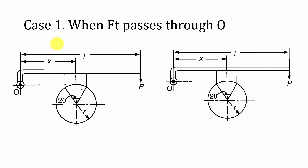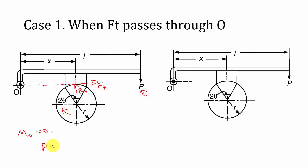There are three cases based on the location of the pivot point O. Case 1 is when Ft passes through O. In this case, considering clockwise rotation: force 1 is P, force 2 is Rn acting upward, and Ft acts towards the right. Taking the moment about O equals zero: minus P into L (clockwise) plus Rn into x (anticlockwise), and there is no eccentricity between Ft and O, so that term is zero. From this we can calculate Rn and Ft.